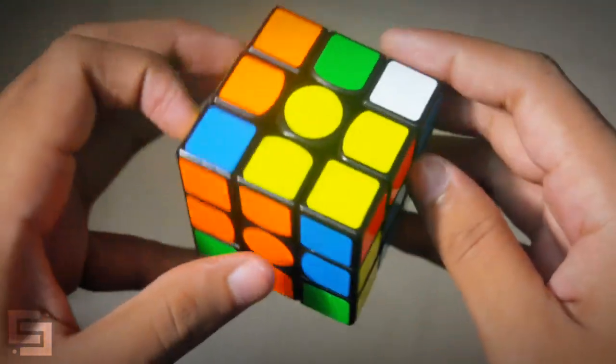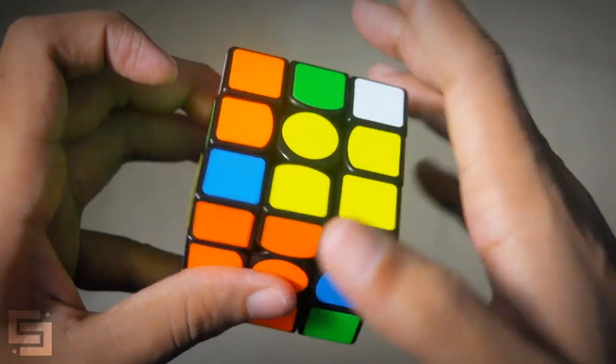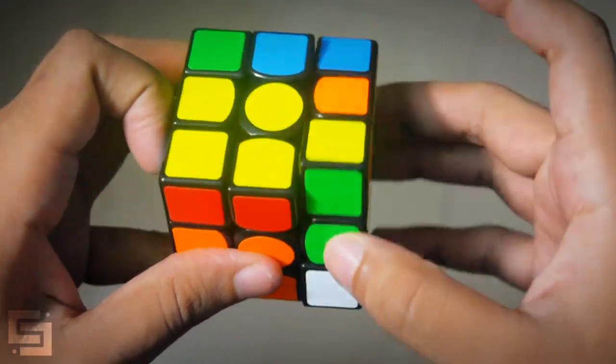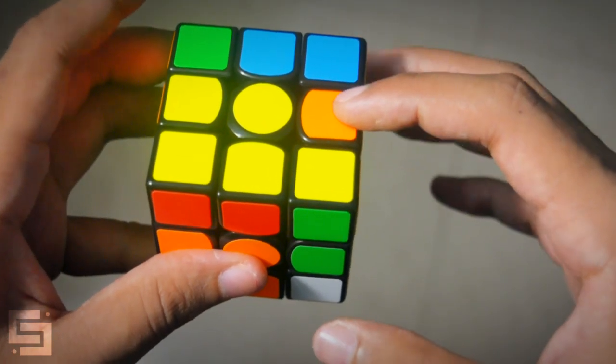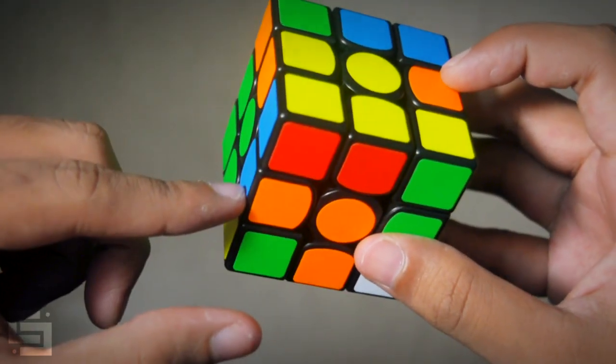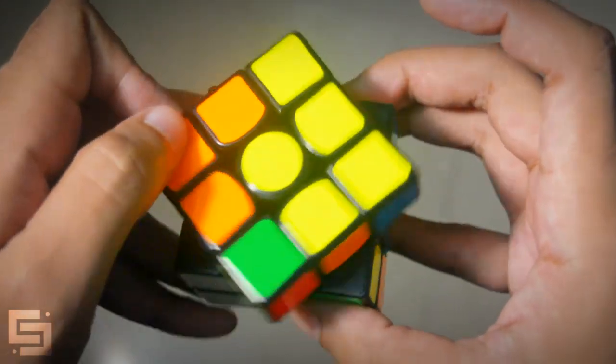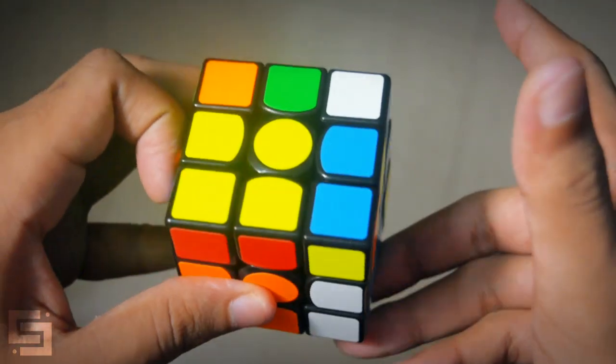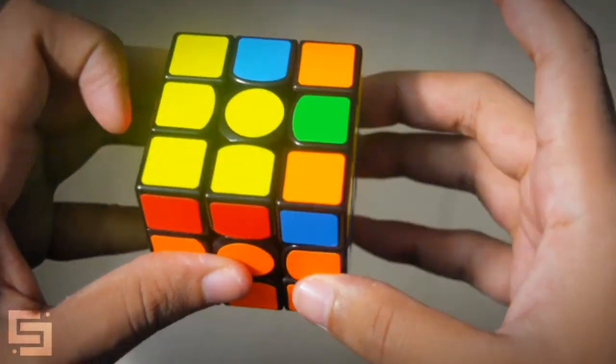And this is the F2L pair that Felix solved next and this pair can be set up into a 3 move insert by rotating like this U2 R U' R' sets it up into a 3 move insert and this F2L pair needs to be solved in the front left slot. So U' L' U' L and then lastly we have this F2L pair R U' R' U R U' R'.